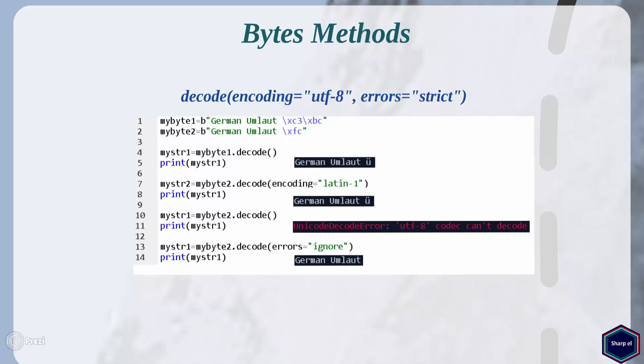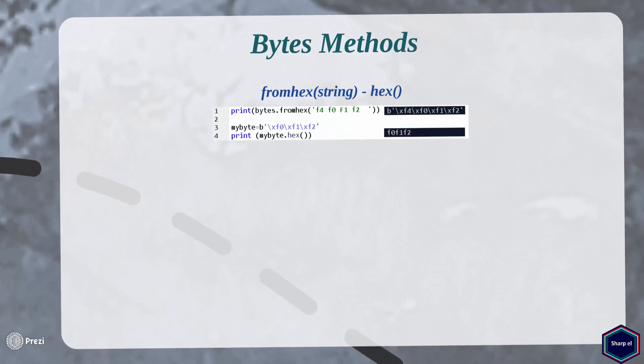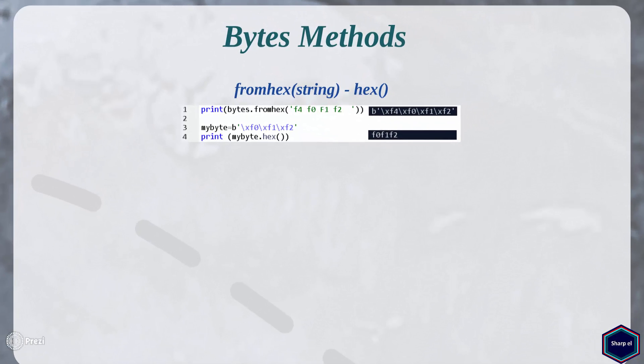Now let's move to the next two simple methods: fromhex and hex. fromhex is a class method and converts a string containing a sequence of hexadecimal digits to a bytes object, as shown in this example. The hex method does the reverse — it converts a bytes object containing a sequence of hexadecimal bytes into a string object.